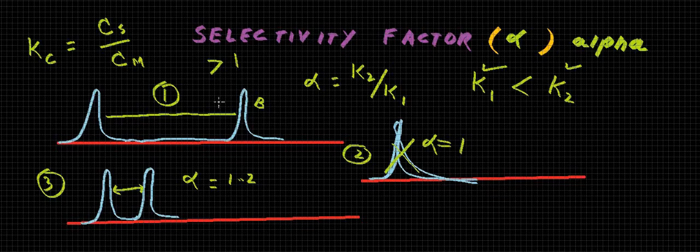To explain this we can have these different situations. Like we have component A and component B here, and in this very case we have the value of alpha quite higher than 1. For example, if we can say that K2 is like 3 and K1 is like 1, so the value is 3, and these components are well separated from each other, and the time difference between the two components to be eluted from the column is quite significantly different from each other.